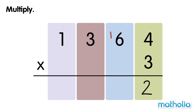Next, multiply the 10s. 3 times 6 tens equals 18 tens. 18 tens plus 1 ten equals 19 tens. Regroup 19 tens into 1 hundred and 9 tens.